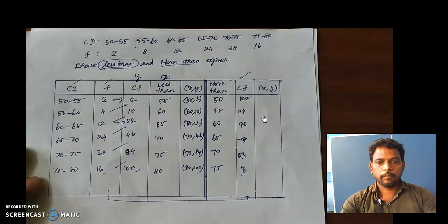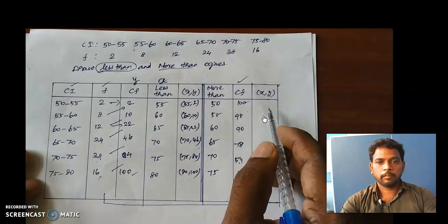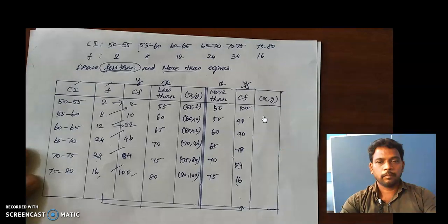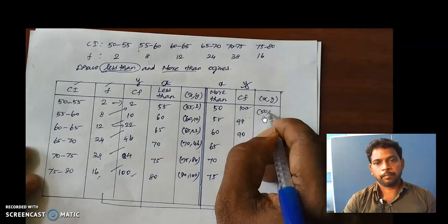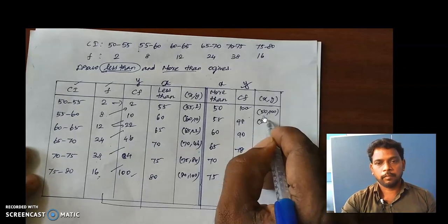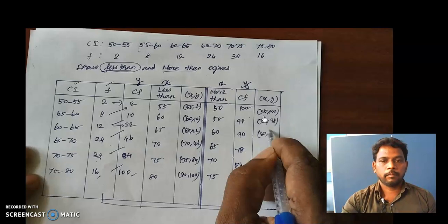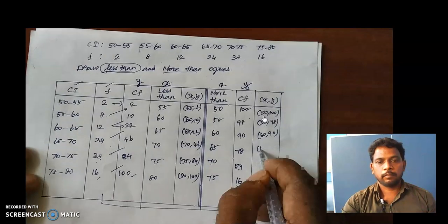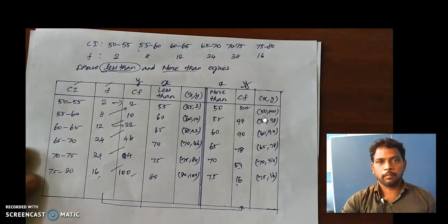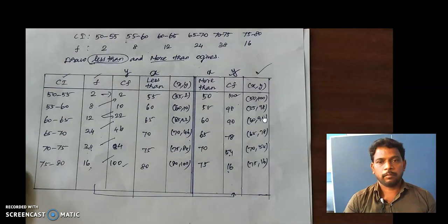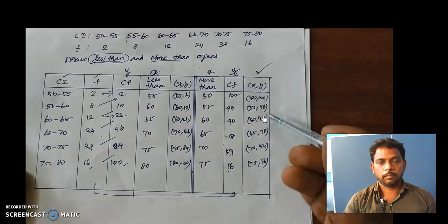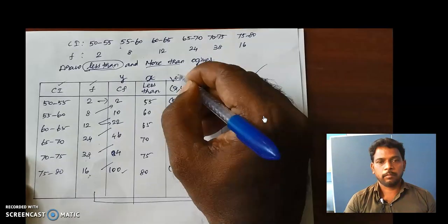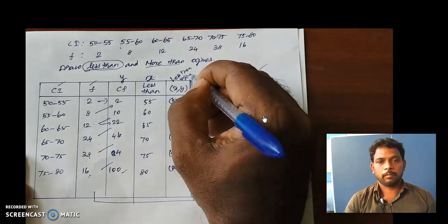The more than ogive points are: 50 comma 100, 55 comma 98, 60 comma 90, 65 comma 78, 70 comma 54, and 75 comma 16. These are the points for the more than ogive. This point set is corresponding to more than ogive, and the earlier point set is corresponding to less than ogive.